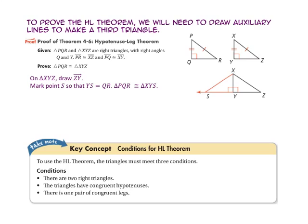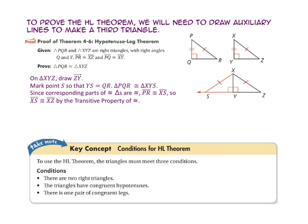Since corresponding parts of congruent triangles are congruent, segment PR is congruent to segment XS. By the transitive property of congruence, segment XS is congruent to segment XZ. By the isosceles triangle theorem, angle S is congruent to angle Z. So triangle XYS is congruent to triangle XYZ by the angle-angle-side theorem.